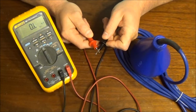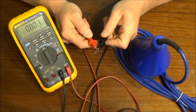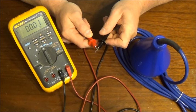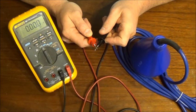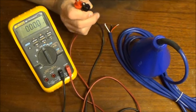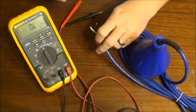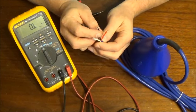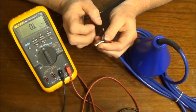If you short the leads together, you will read a near perfect short as zero, 0.0 or 0.1 on the meter. If we look at the float switch conductors, there's three on this particular float.